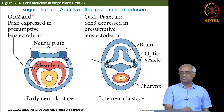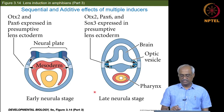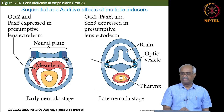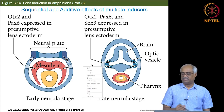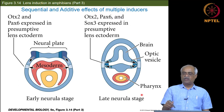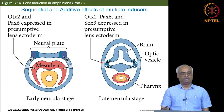Multiple transcription factors are activated together — only all of them together lead to the formation of the lens placode. Sequential induction comes from: initially the endoderm, then mesoderm, then adjacent ectoderm, then finally the optic vesicle — in that sequence, their activity becomes additive and finally a particular tissue gets specified there.